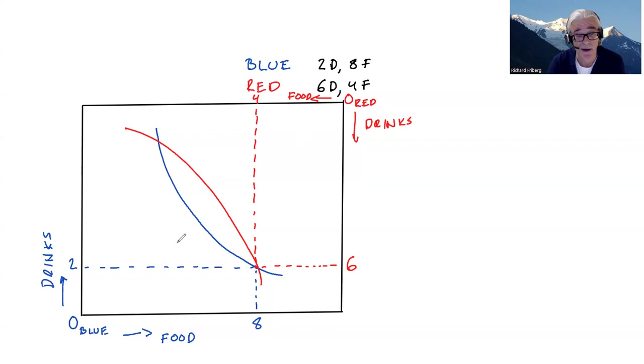And for Red's point, indifference curves that are further from her origin are associated with high utility, whereas points along the indifference curve she is indeed indifferent between them. So a couple of things to note. One is that in this economy, all the goods are owned somewhere.